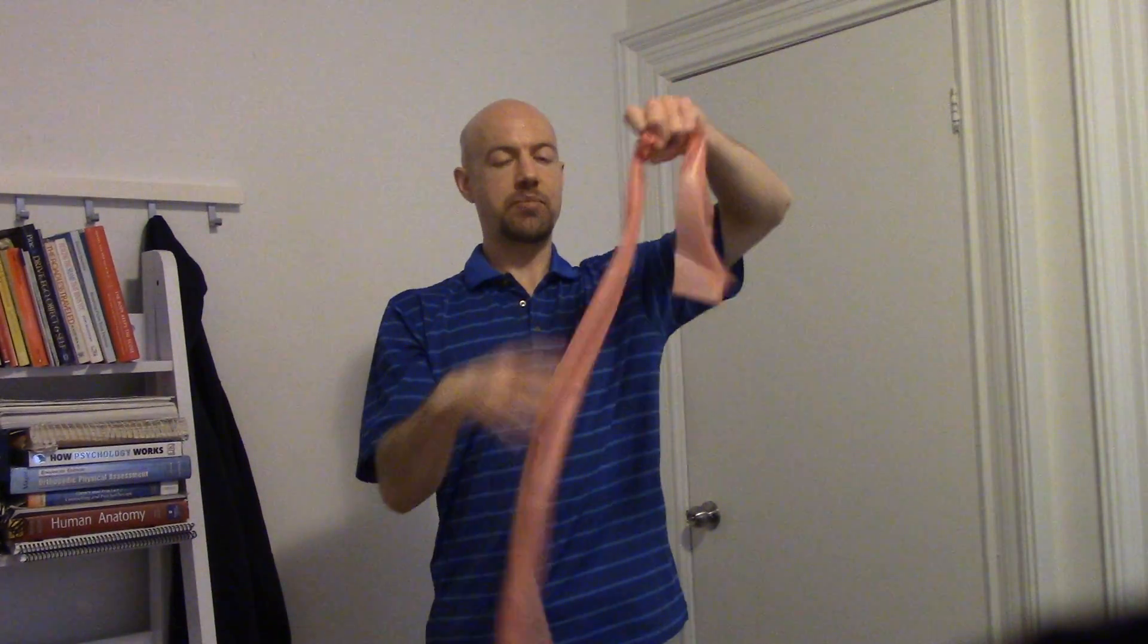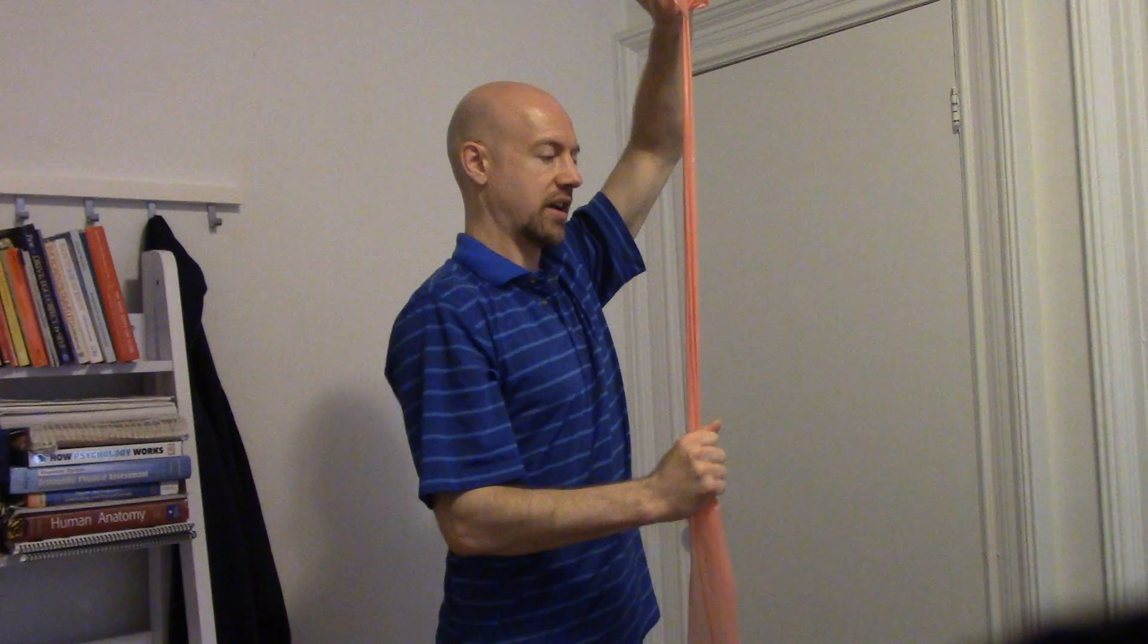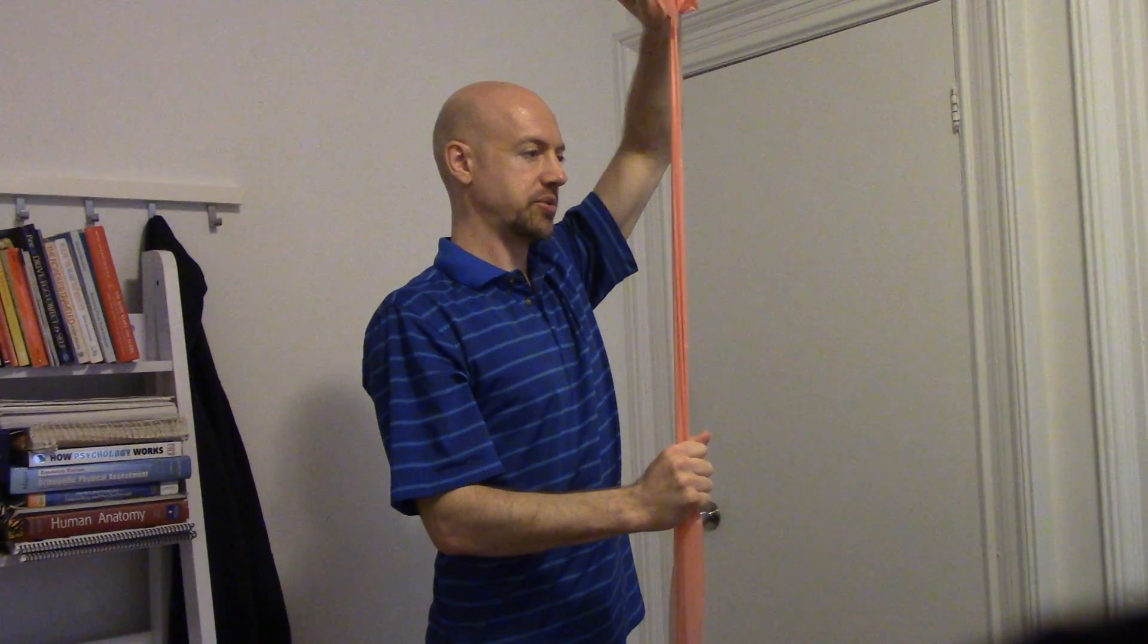Now with your tricep, you can also, what I like to do with the band is tie it to the top of a door or put a couple of knots on the top of the door, raise it up. So now I can keep my shoulder in a bit more of a neutral position. And then I'm going into extension back here. And again, three sets of ten.